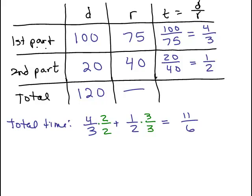So the total time is 11 sixths or 1 and 5 sixths hours. Now if you wanted to know what that was in terms of hours and minutes,